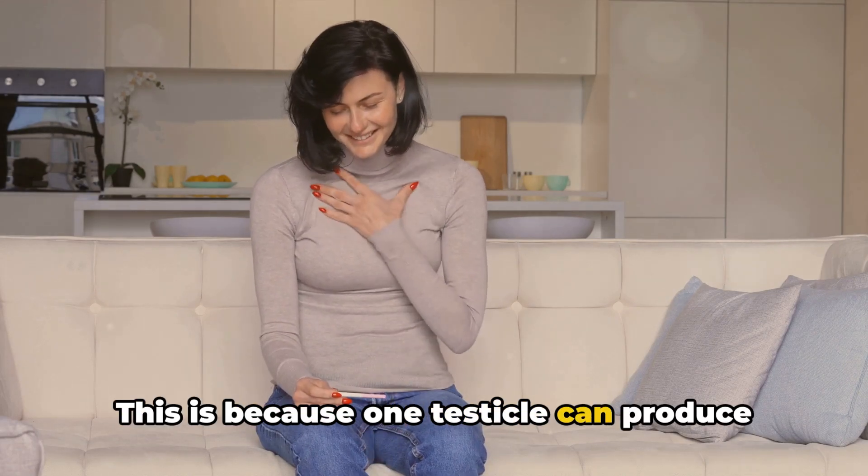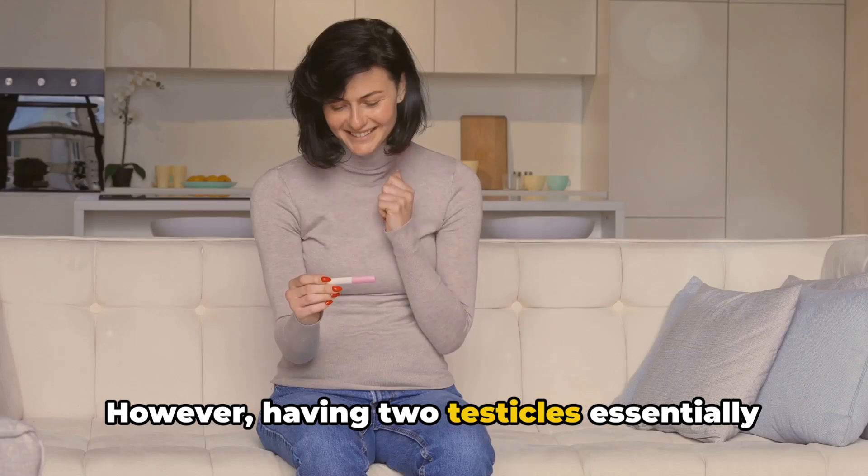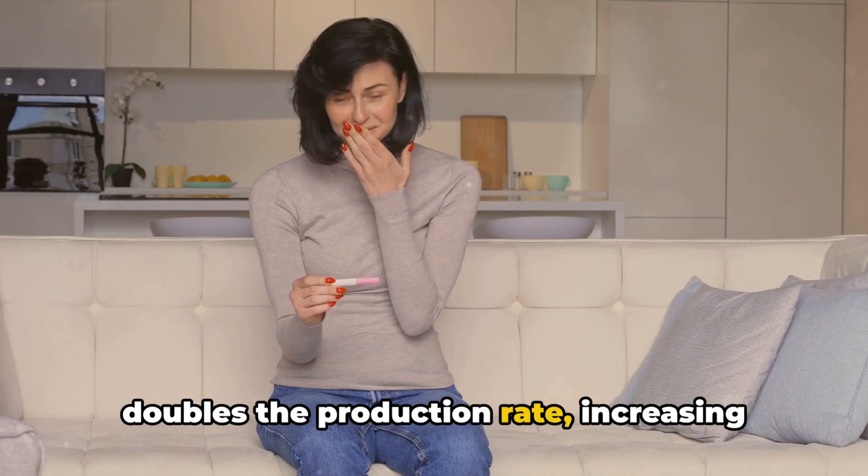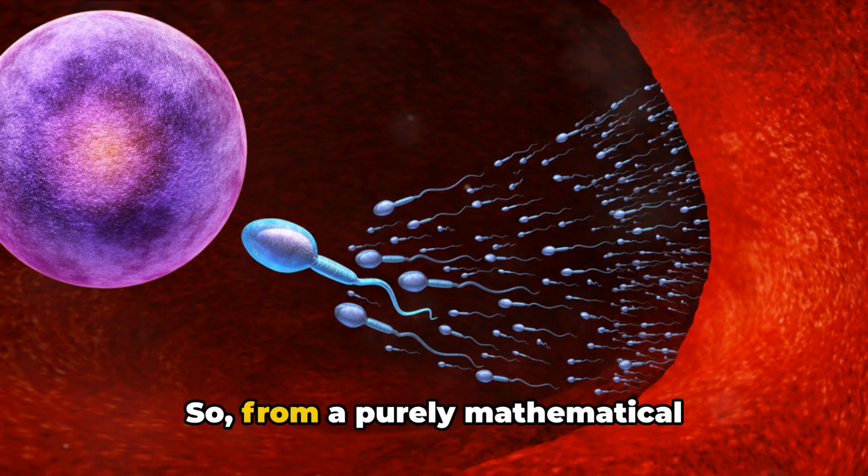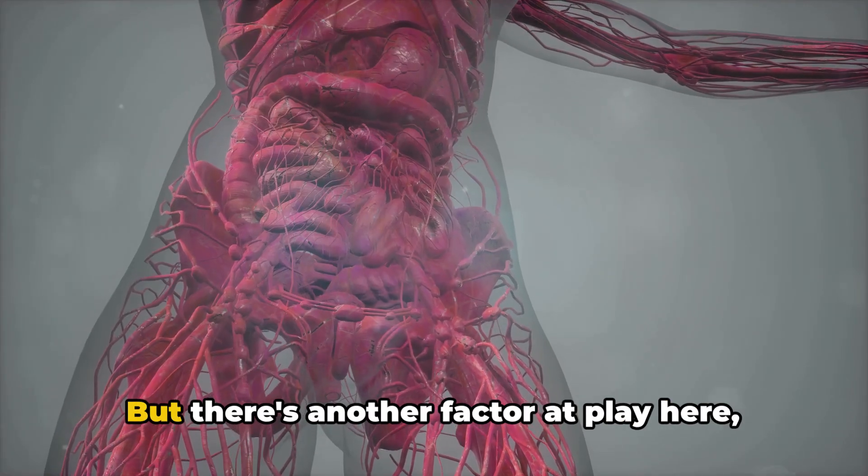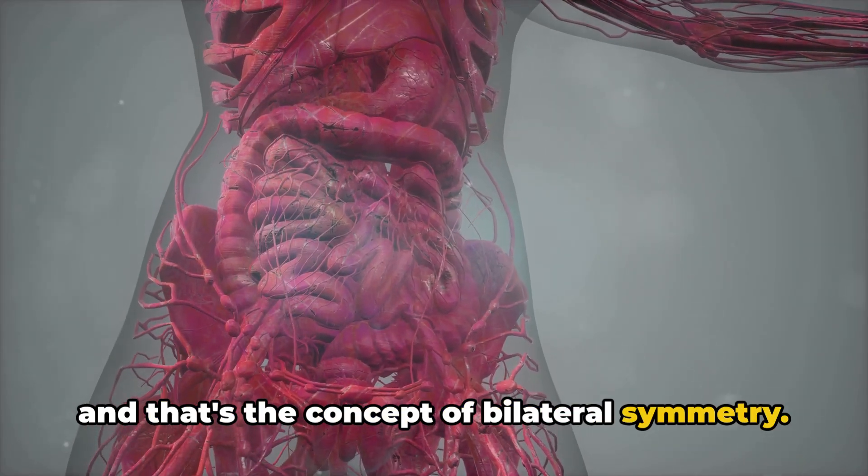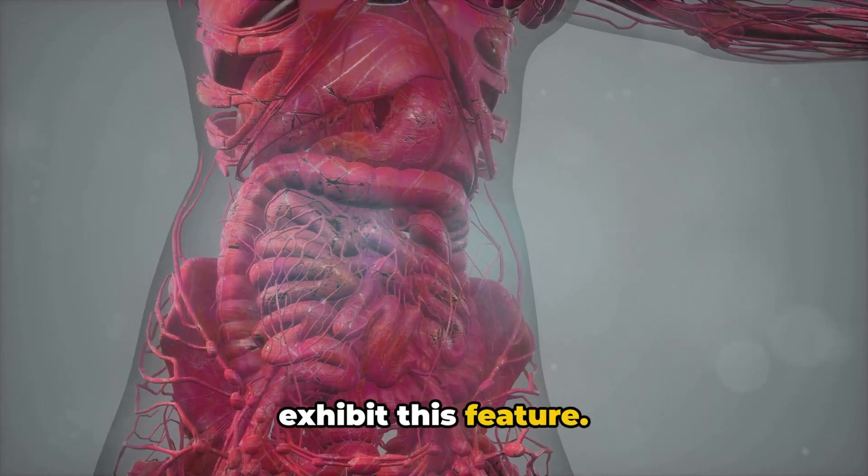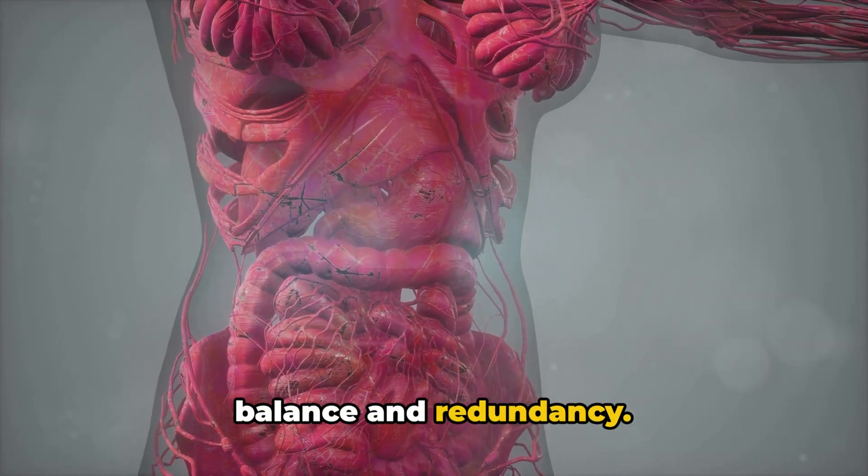This is because one testicle can produce enough sperm to fertilize an egg. However, having two testicles essentially doubles the production rate, increasing the chances of successful fertilization. So from a purely mathematical standpoint, two is indeed better than one. But there's another factor at play here, and that's the concept of bilateral symmetry. Almost all animals, including humans, exhibit this feature. It's an evolutionary trait that provides balance and redundancy. If one organ gets injured, there's a backup. It's like having a spare tire in your car. You hope you never need it, but it's comforting to know it's there if you do.